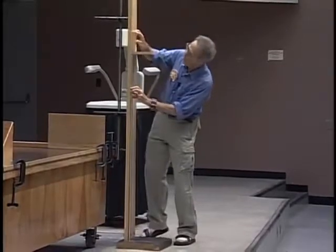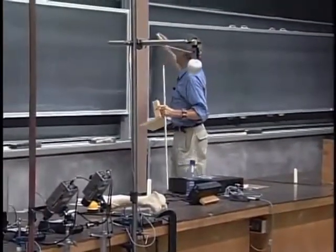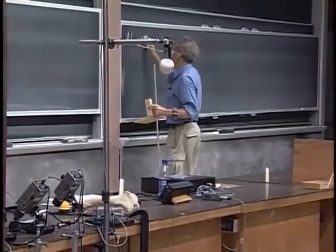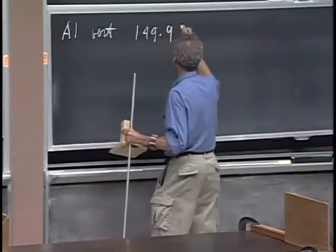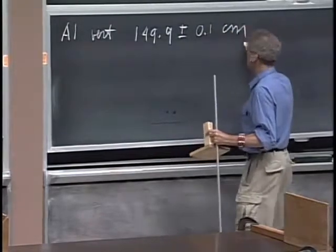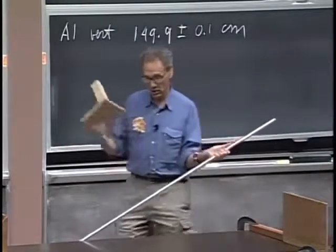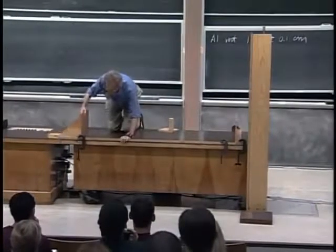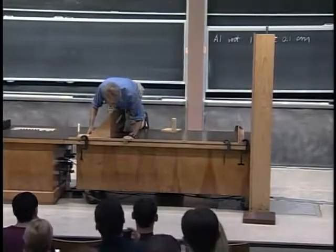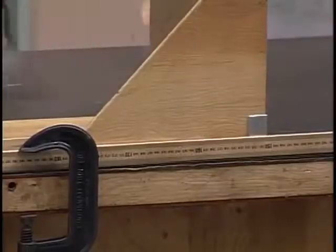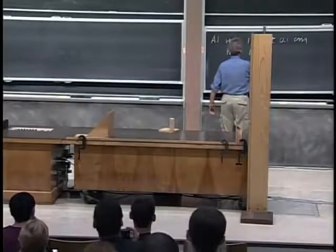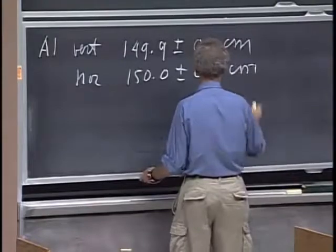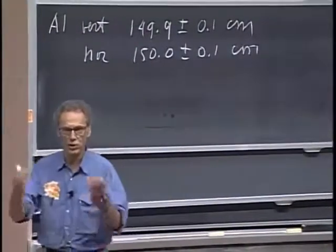I will measure it — you have to trust me; during these three months we have to trust each other. So I measure here 149.9 centimeters for the aluminum bar in the vertical position. But I would think that the uncertainty of my measurement is probably one millimeter — I can't really guarantee any better than that. Now measuring the bar horizontally: 150.0 centimeters, again plus or minus 0.1 centimeter. So you would agree that I am capable of measuring plus or minus one millimeter — that's the uncertainty of my measurement.